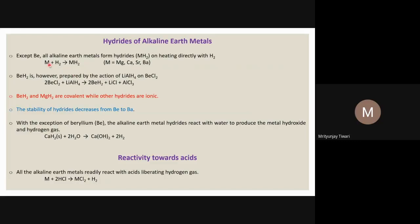Magnesium, calcium, strontium, and barium all directly react with hydrogen to form hydrides. These are ionic hydrides. However, beryllium hydride can be formed with the help of lithium aluminum hydride. Beryllium has less electropositive character, and its reduction potential is the lowest in the negative range, meaning it has less potential to directly reduce hydrogen.